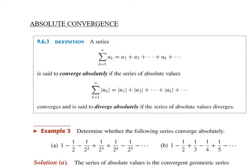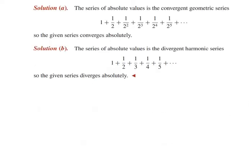The first example asks us to determine whether the following series converges absolutely. Subdivision (a) is: 1 − 1/2 − 1/2² + 1/2³ + 1/2⁴ − 1/2⁵ − ... Taking the absolute values of the given series, we get 1 + 1/2 + 1/2² + 1/2³ + ..., which is a geometric series with first term a=1 and common ratio r=1/2. Applying the geometric series test, we conclude that the given series converges absolutely.